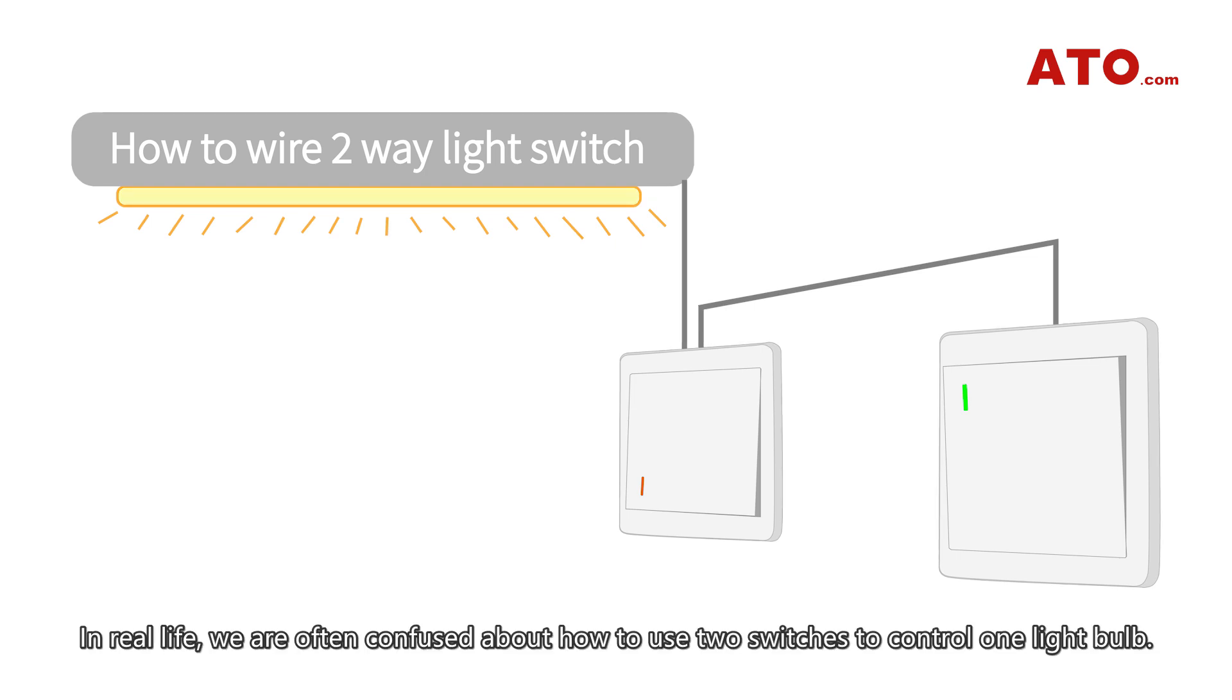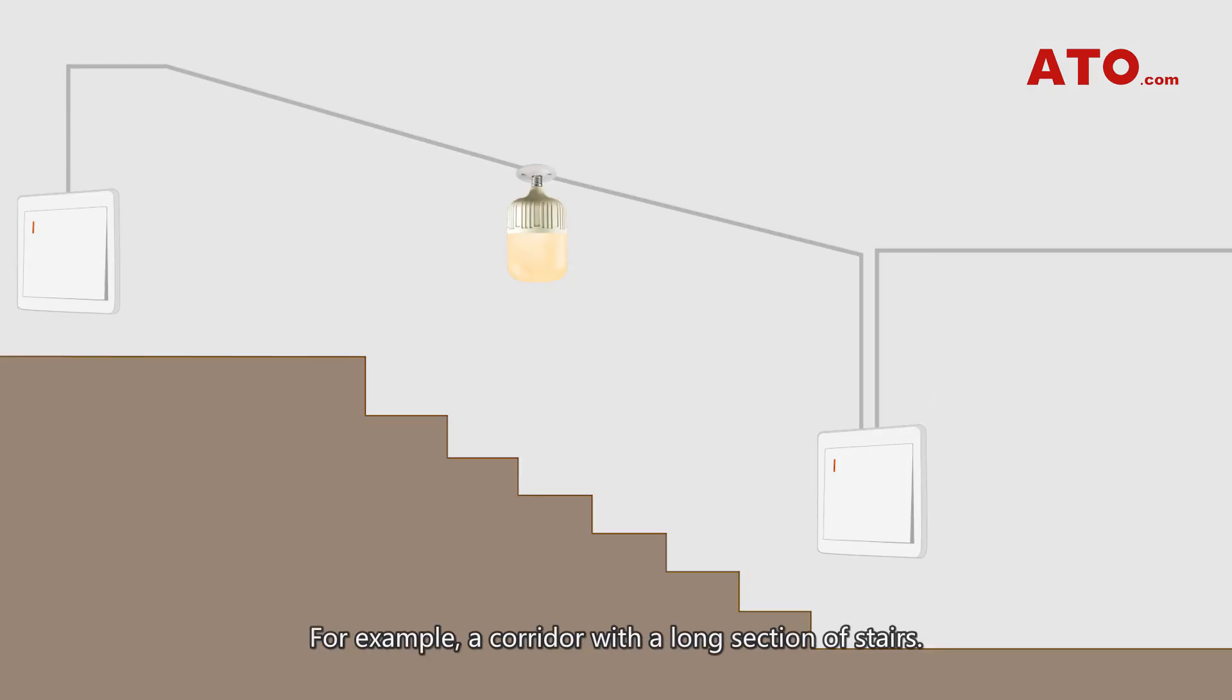In real life we are often confused about how to use two switches to control one light bulb, for example a corridor with a long section of stairs.